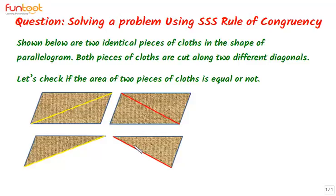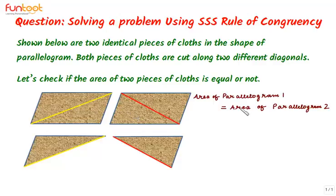Let's see how we can do this problem with the help of congruence. Both pieces in the form of a parallelogram are given to be identical, and when these are identical that means they are congruent, and being congruent means the areas of these two pieces of cloth are the same. So area of parallelogram 1 is equal to area of parallelogram 2.